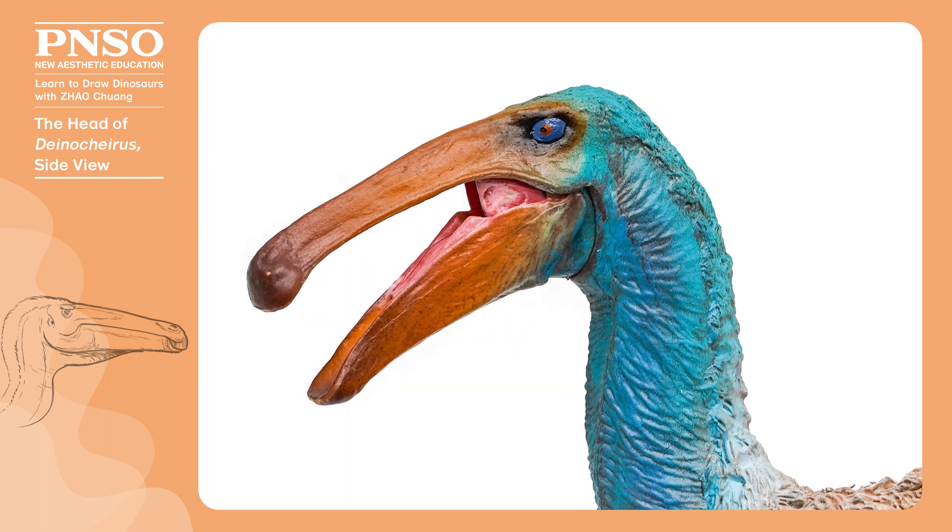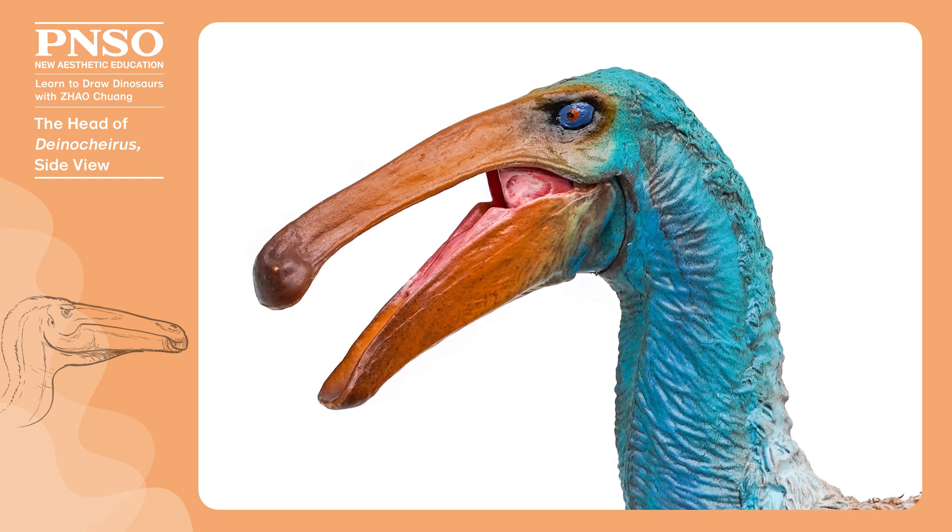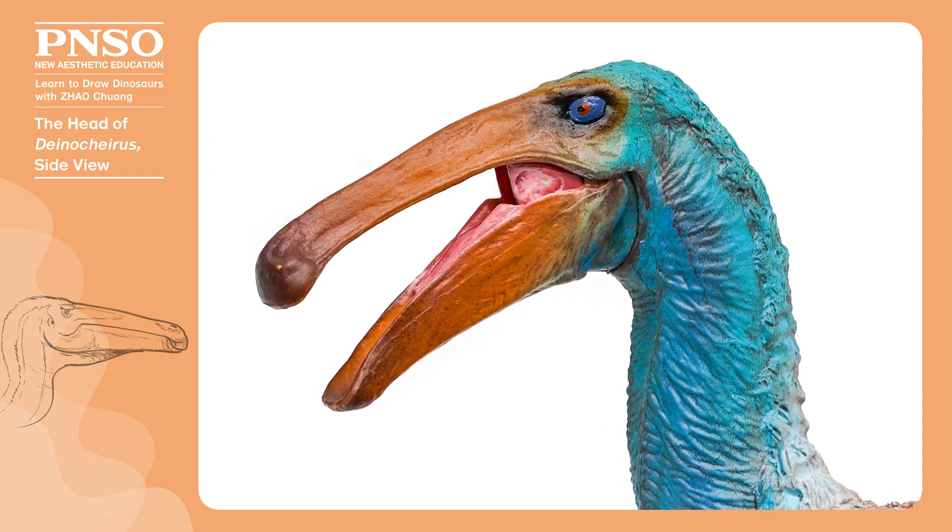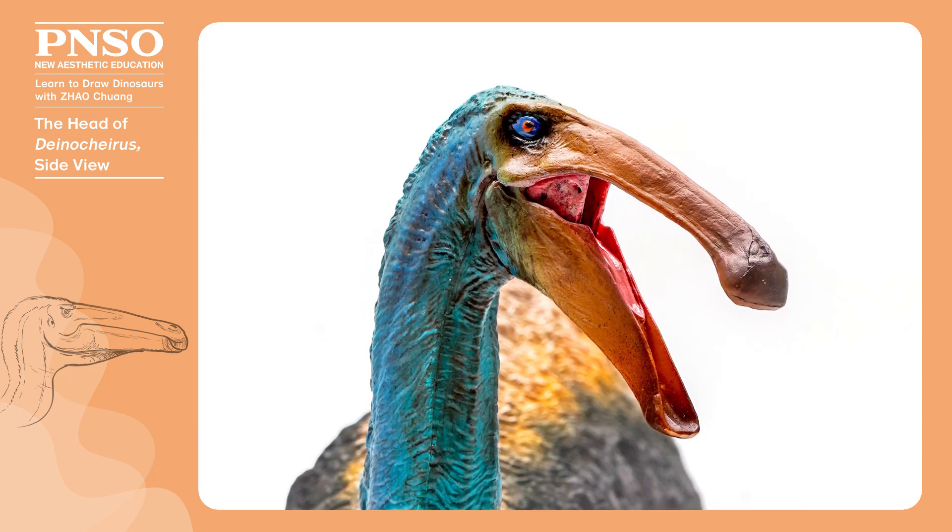Deinocheirus had a duck-like face with a particularly thick lower jaw. It had a slender head, a thick lower jaw, a narrow upper jaw, and a pair of tiny eyes, very different from traditional ornithomimosaurs.